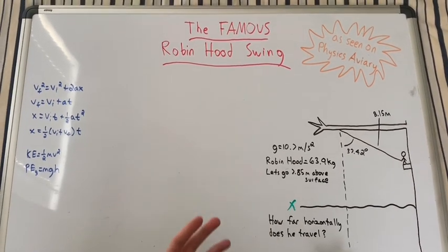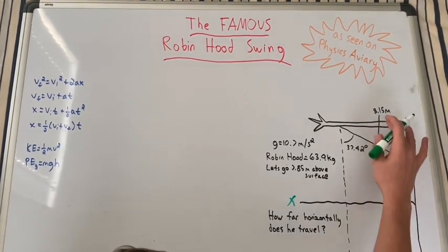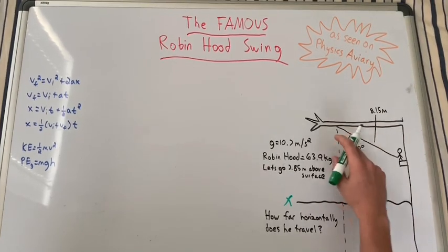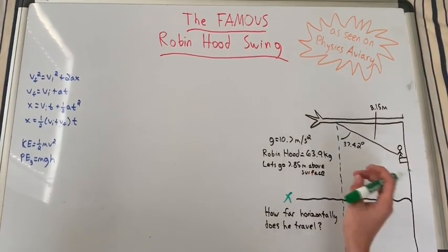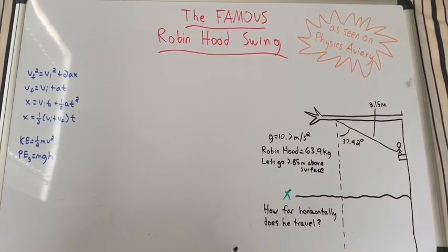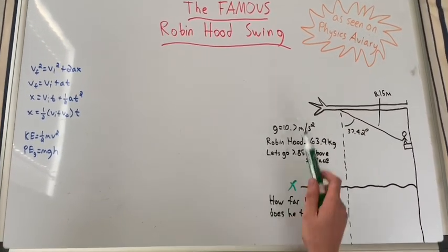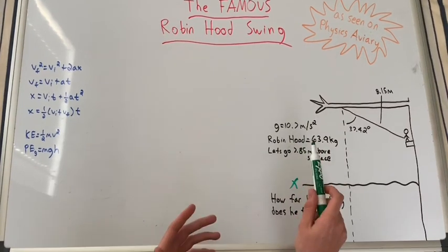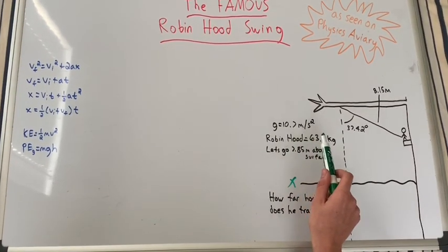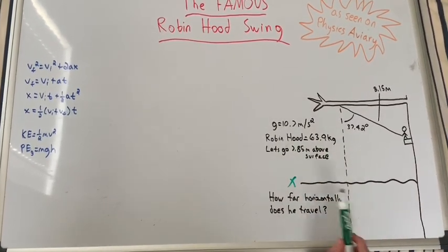We have some given quantities: the length of the rope which is 8.15 meters, the angle from the vertical point of release which is 37.42 degrees, Robin Hood's mass, and the gravity on the planet which is different—10.7 instead of 9.8 meters per second squared. And then we have when he lets go, 7.85 meters above the surface.